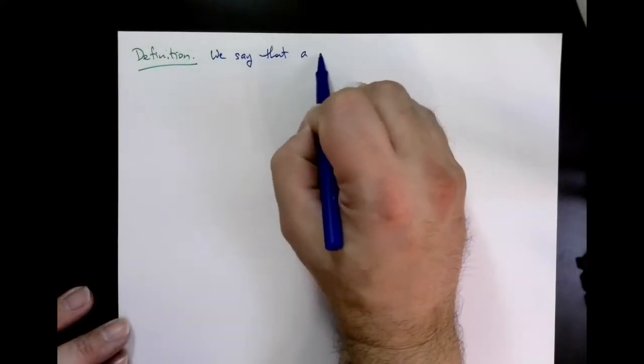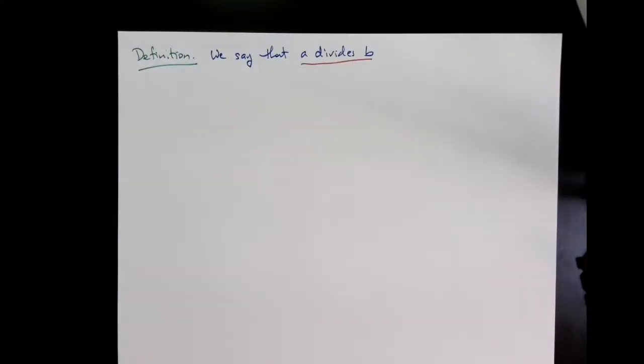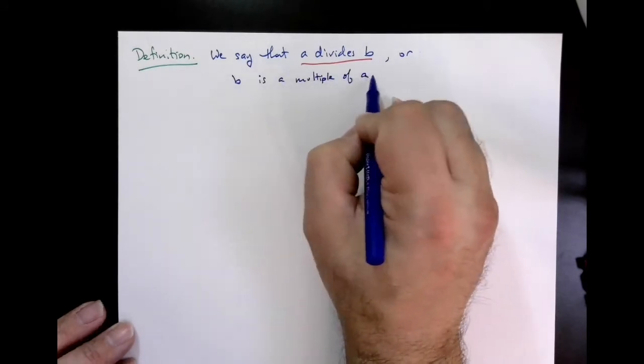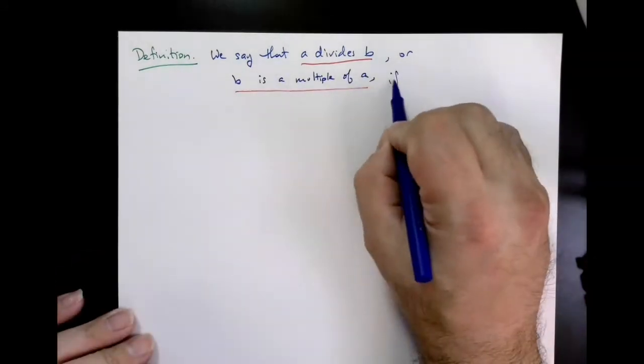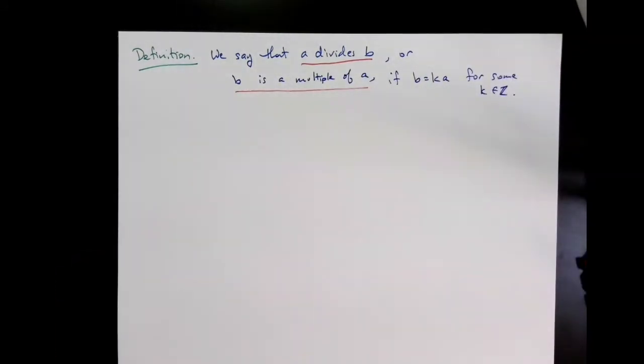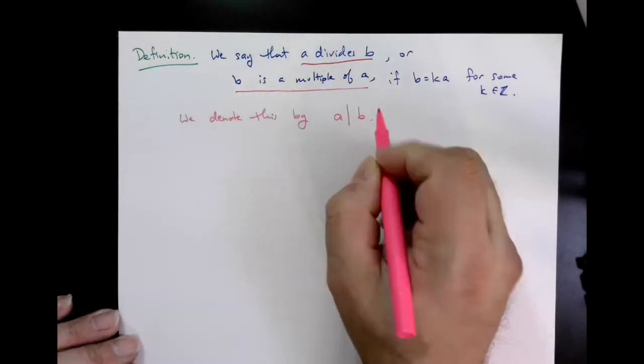Okay, here's the definition. We say that A divides B, or B is a multiple of A, if B equals K times A for some integer K. We denote this by the following symbols.